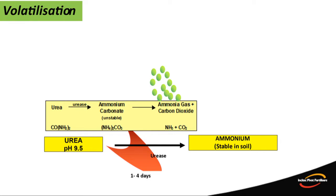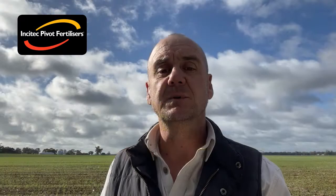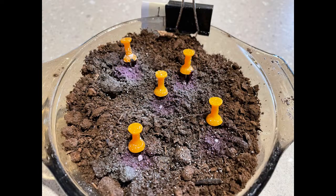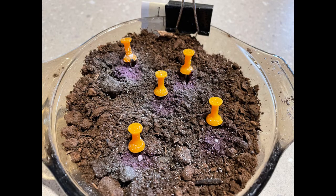This conversion is driven by a naturally occurring enzyme called urease. Urea acted on by urease converts to ammonium carbonate, which is unstable and can be lost as ammonia gas. These losses are increased because of the pH influence from the urea granule on the soil surface. Urea has a pH of about nine and a half.